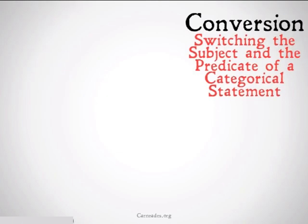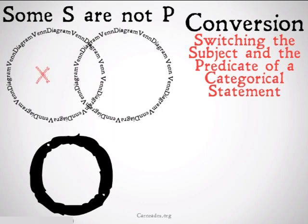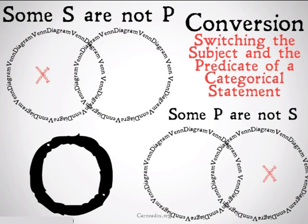This is also going to be a fallacy when we try it for O statements. Some S are not P. Some P are not S. Clearly, once again, the diagrams are different. The X is in a different place. If we map those diagrams onto each other, they wouldn't match. So this is an example of the illicit conversion fallacy.